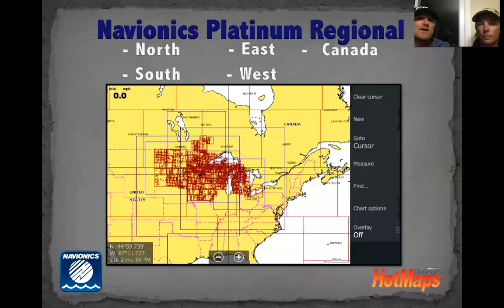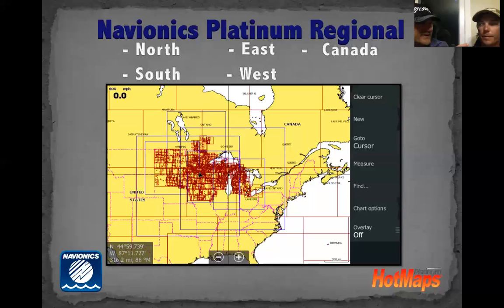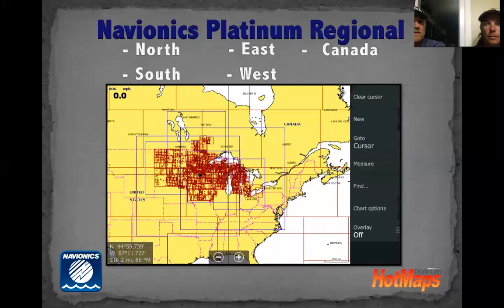Navionics is the first to give you the entire continent of North America and all the data, all for a $200 price point — as opposed to the old regional mapping. How many cards did you have to keep running? Tons — fishing across the country, even if you just stayed in your state with two graphs, that's still two cards to purchase just for that region. Now you can download anywhere.